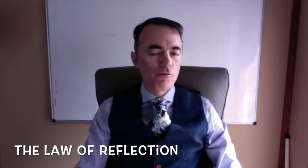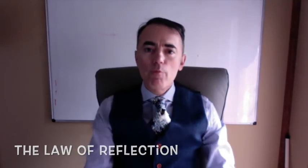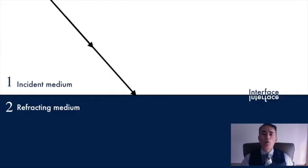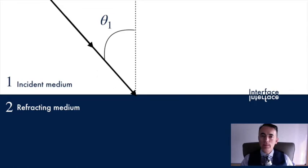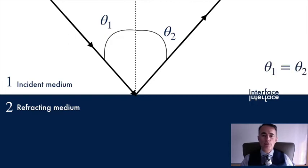The first thing we want to consider is the law of reflection. When a ray of light traveling on a medium strikes on a surface of a different medium, it can be reflected at the interface that separates both media. The law of reflection states that the angle of reflection is the same as the angle of incidence.